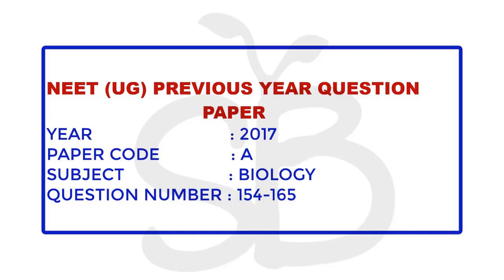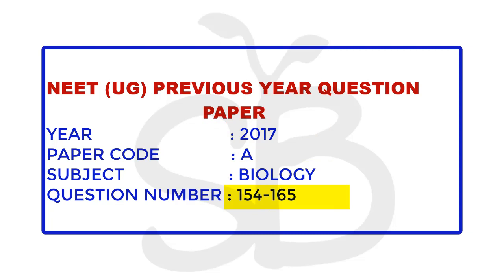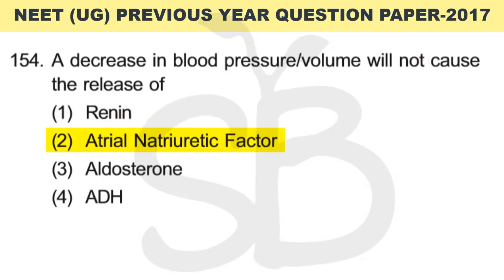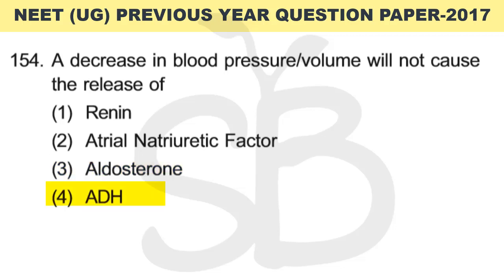We are going to discuss NEET-UG 2017 biology. Question number 154: A decrease in blood pressure and volume will NOT cause the release of — option 1: renin, option 2: atrial natriuretic factor, option 3: aldosterone, option 4: ADH. The question asks: which hormone is NOT released when blood pressure and volume decrease?